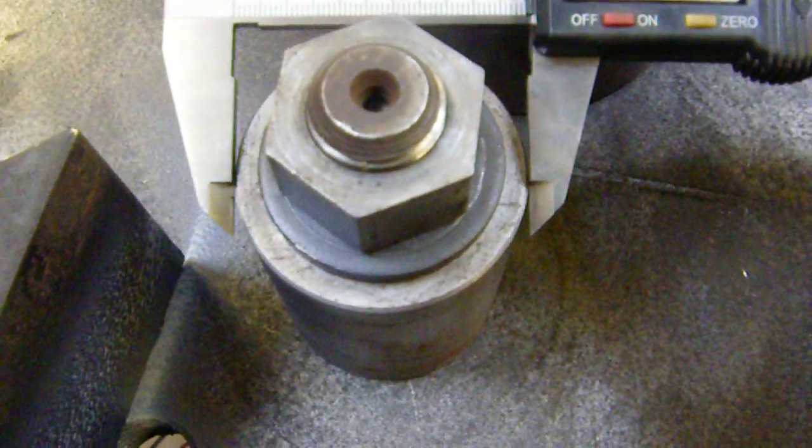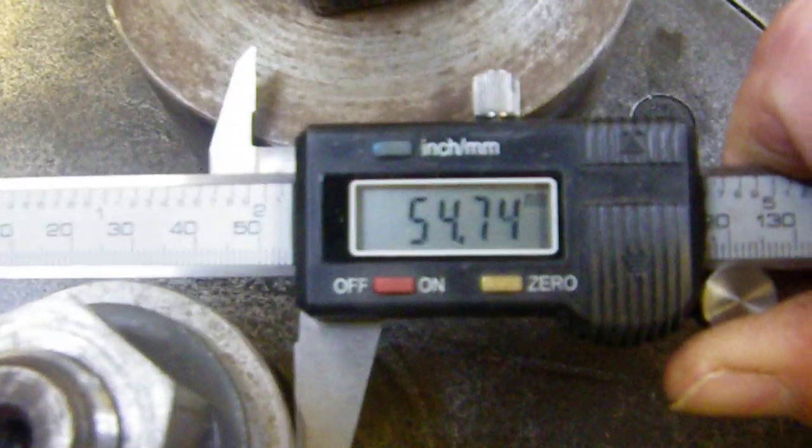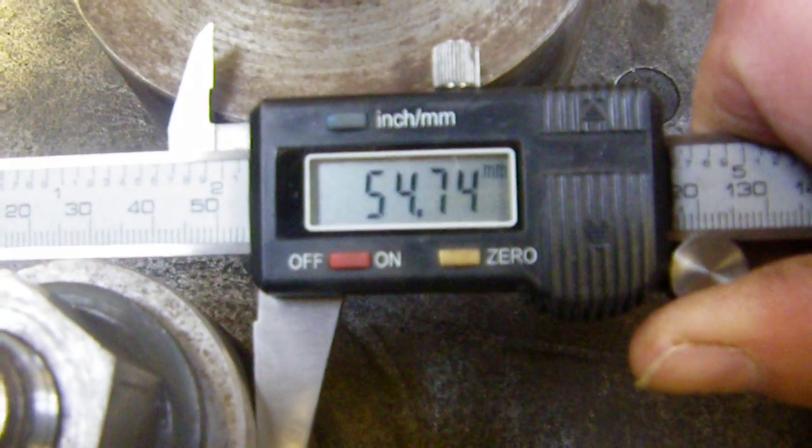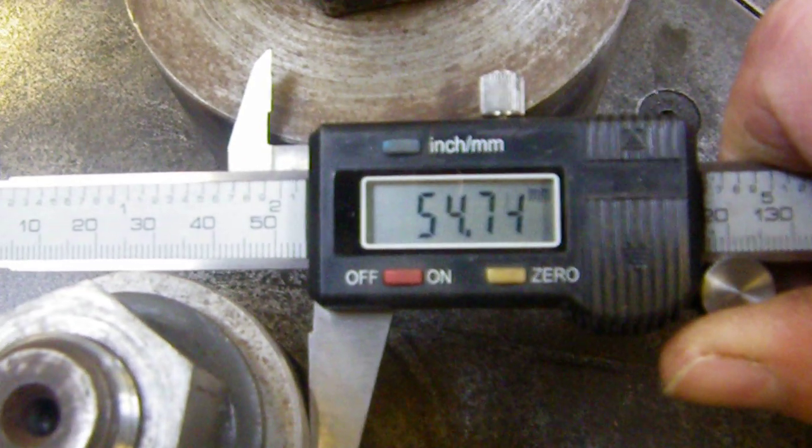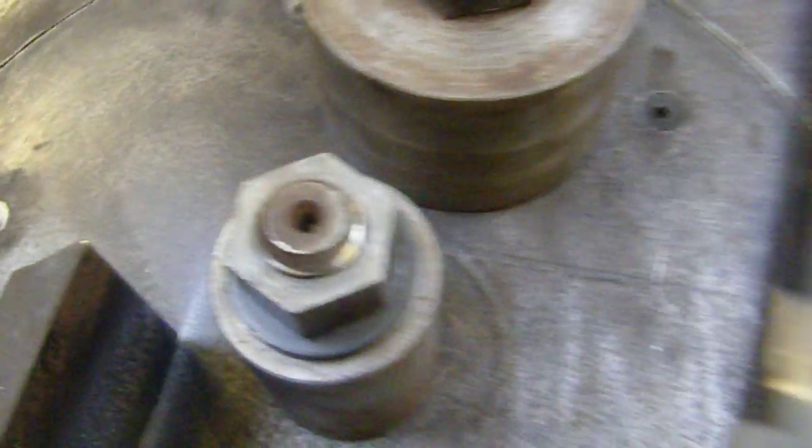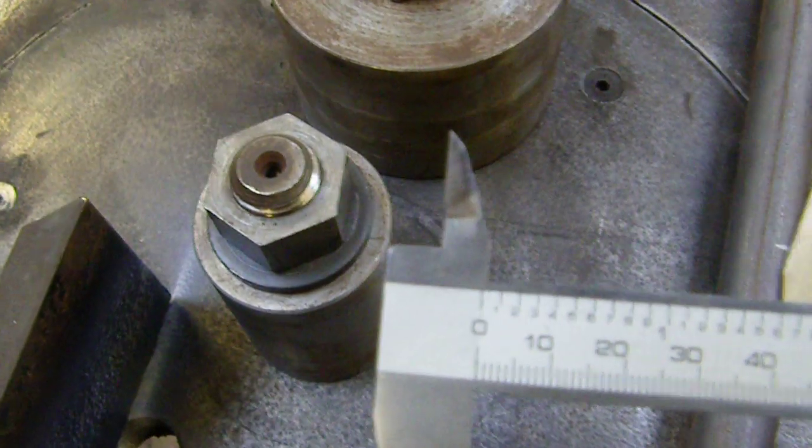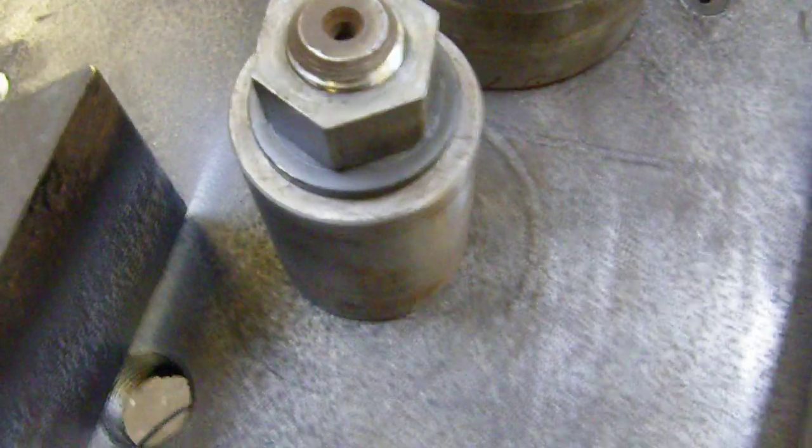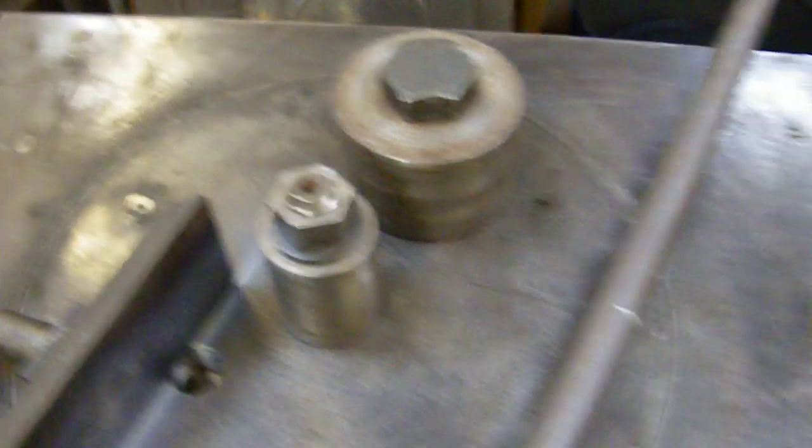OK, so we've got a 25mm round bar, and I'm going to bend that around. The die is 55mm for all intents and purposes. So we've got a radius of, what's that, 27.5mm. So I'm going to bend it around a 27.5mm radius. If all things go to plan.